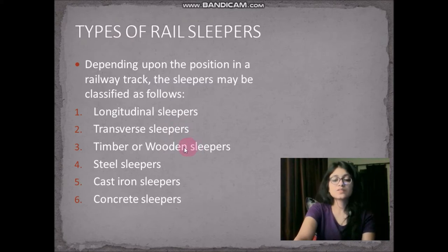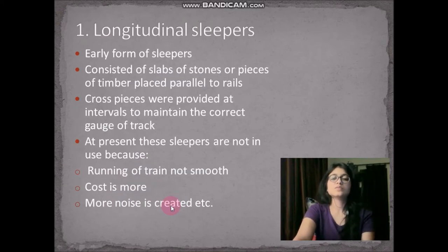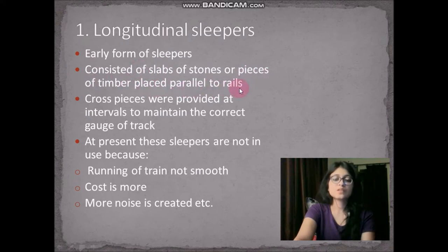Transverse sleepers are further divided into wooden or timber sleepers, steel sleepers, cast iron sleepers, and concrete sleepers, depending upon the material by which they are made. Longitudinal sleepers were an early form of sleepers consisting of slabs of stone and pieces of timber placed parallel to the rails.